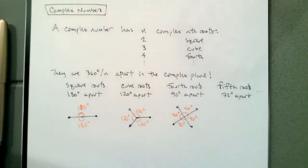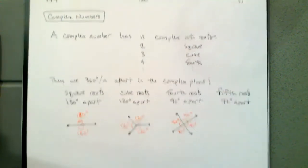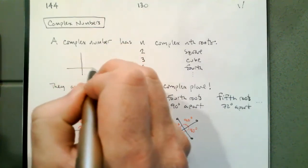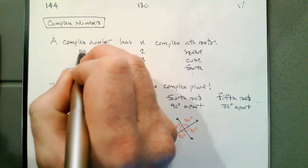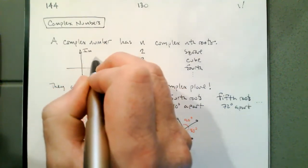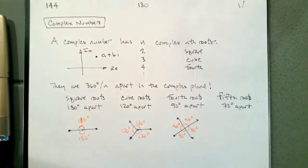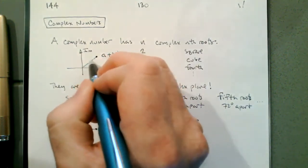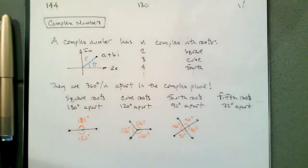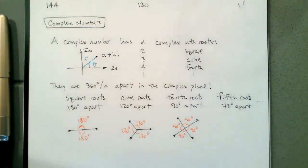We have two ways of describing complex numbers: using Cartesian coordinates — a plus bi — and polar coordinates, where we have a distance and an angle. In the complex plane there's a real axis and an imaginary axis. A number can be expressed in rectangular coordinates as a plus bi, or in polar coordinates as a distance r from the origin at an angle theta.